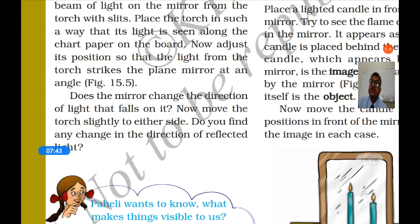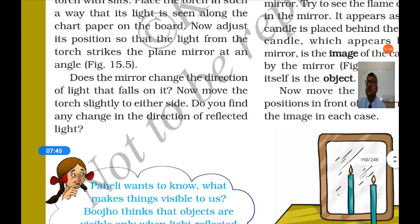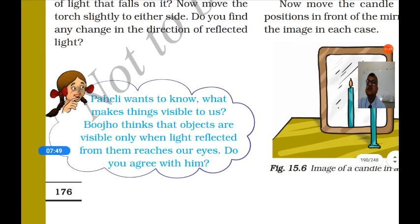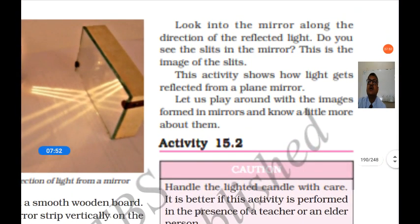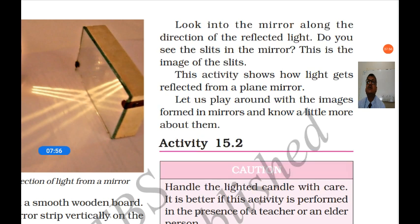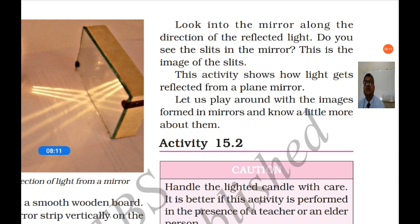Now move the torch slightly to either side and you will find the direction of reflected light changes again. Look into the mirror along the direction of reflected light — do you see the slits in the mirror? Yes, you can see the slits in the mirror. That is the image of the slits. This activity shows how light gets reflected from a plane mirror.